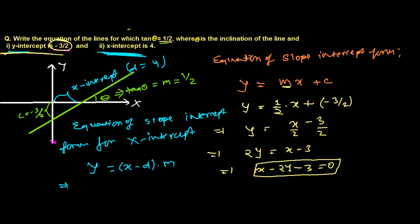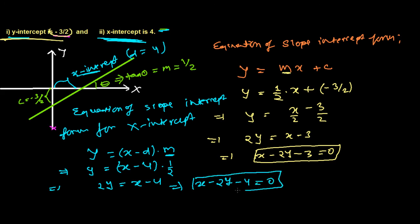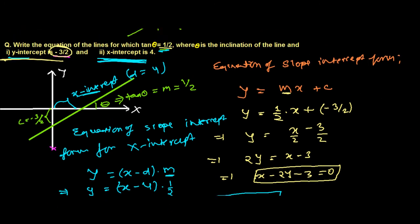So y equals x minus d. The x-intercept d is given as 4, and the slope is 1 by 2. So y equals 1 by 2 times x minus 4. Multiplying through by 2: 2y equals x minus 4, which rearranges to x minus 2y minus 4 equals 0. This is the required equation for x-intercept 4 and slope 1 by 2.